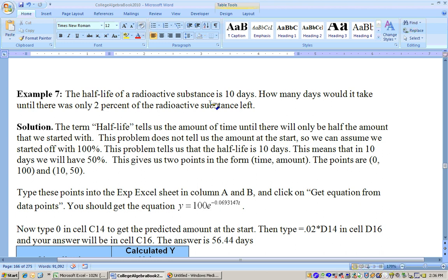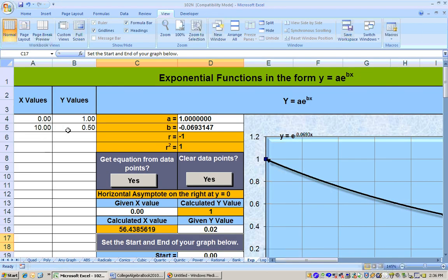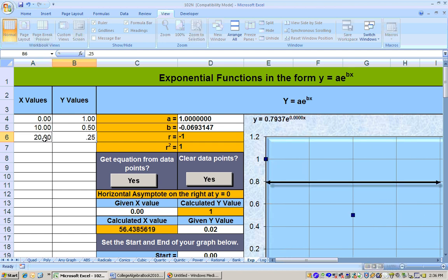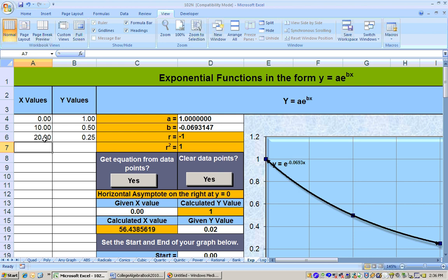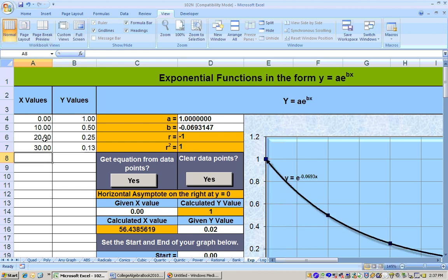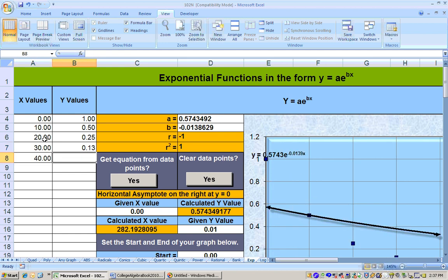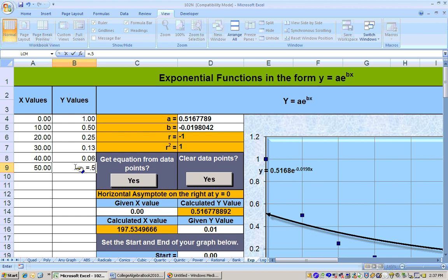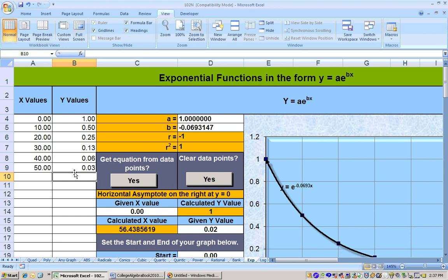So we could think about this a second. For example, at time zero, we would have had 100 percent. At 10 days, 50 percent. At 20 days, we would have had 25 percent. Now, we didn't need to type all these in, but I'm going to show you that that is the right answer. In another 10 days, 30 days, we would have had half that 25 percent or 0.125. In another 10 days, 40 days, we would have had equals 0.5 times this amount. We'd be down to about 6 percent. By 50 days, we would be down to half of this amount right here, and that would take us down to about 3 percent. So in 50 days, you're down to 3 percent. It makes sense that in 56 days, you'd be down to 2 percent.